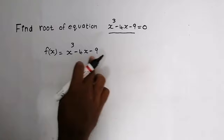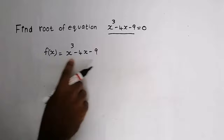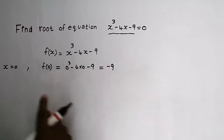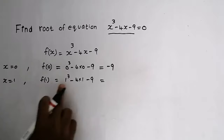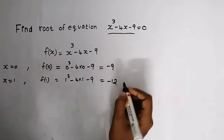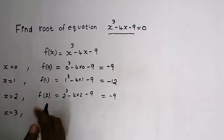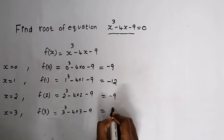Now put x = 0: f(0) = 0³ - 4(0) - 9 = -9. Put x = 1: f(1) = 1³ - 4 - 9 = -12. Put x = 2: f(2) = 2³ - 4(2) - 9 = -9. Now when x = 3: f(3) = 6.